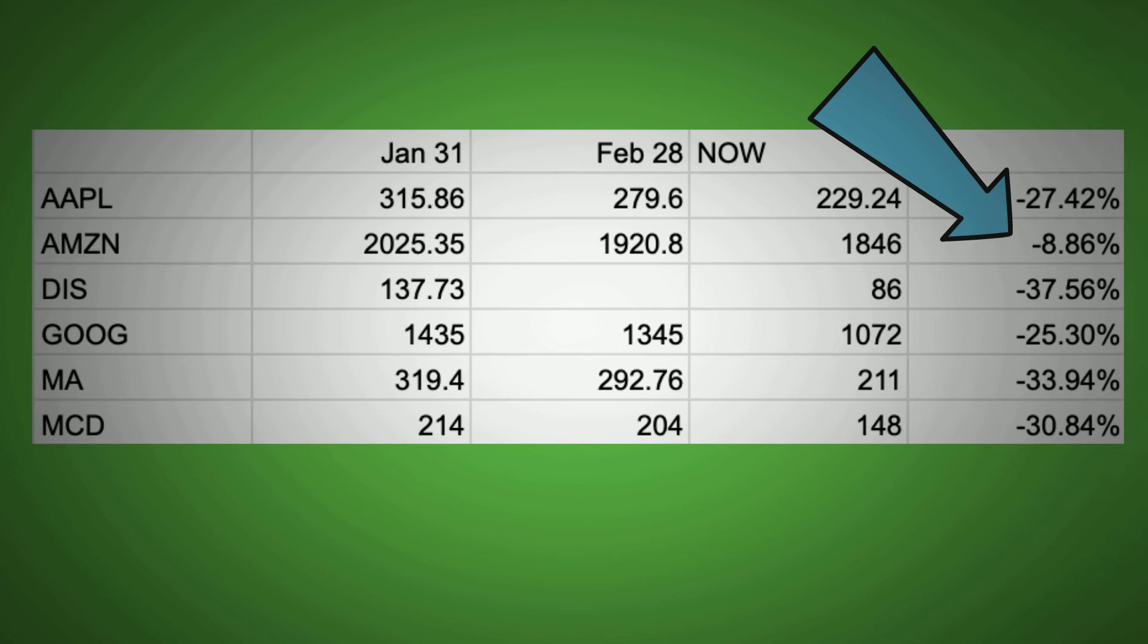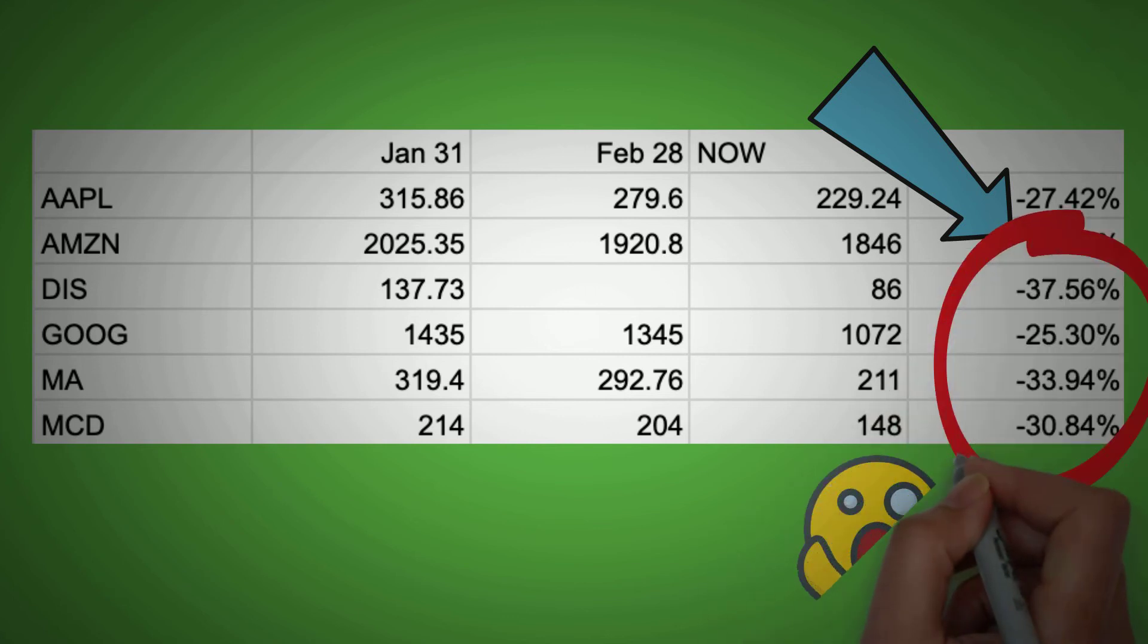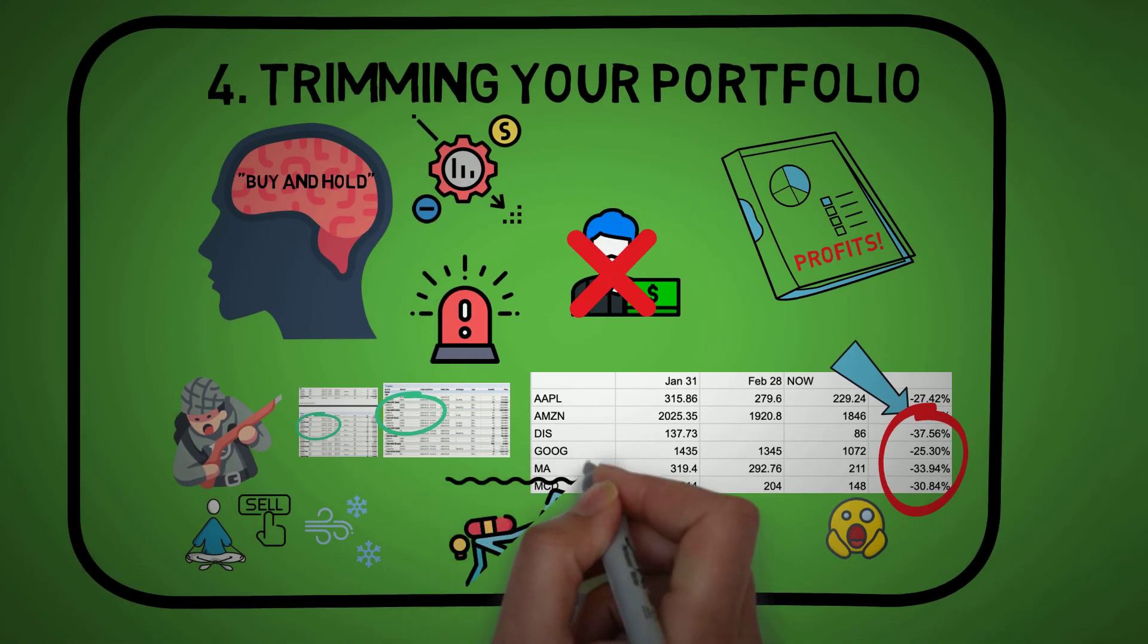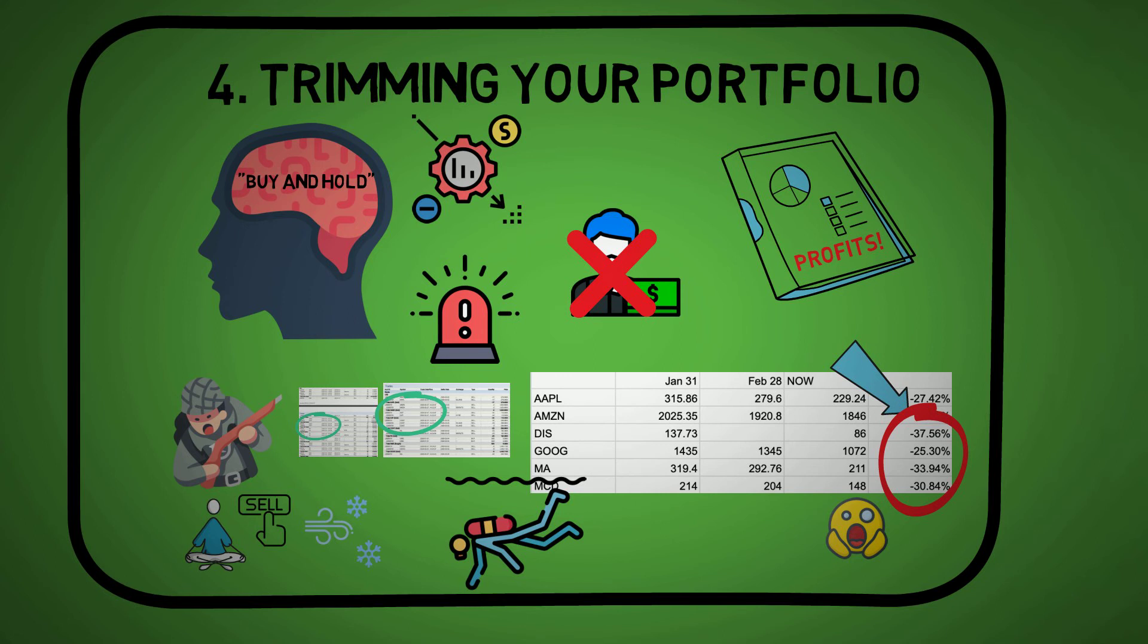Several things to note here is that the companies I invested in are the most dominant players in the industries, and yet, they can still drop 30 plus percent during rough times. When Mr. Market decides to tank, everyone goes along for the dive with them. If I decided to reinvest back into these stocks, I've essentially saved myself 30 plus percent. Money saved is money earned, right?